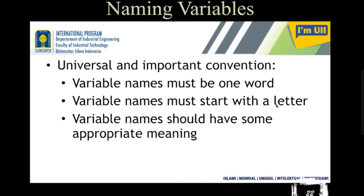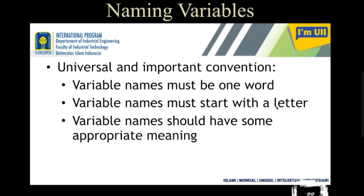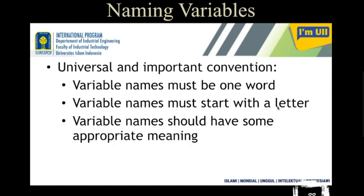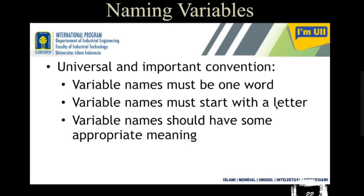Variable names should have an appropriate meaning. For example, don't write 'xyz' or 'abc' as a variable name. If you wrote a program and come back two or three months later to revise it, you'll be confused by what 'abc' or 'xyz' means. Instead, if you write 'lastName', you will immediately identify that this variable stores the last name of a particular object. Always give a meaningful name that corresponds to what the variable represents.